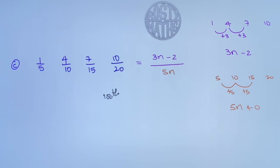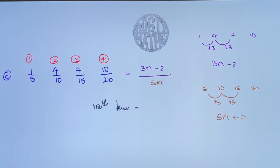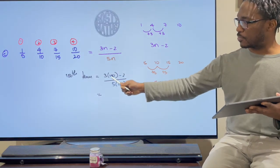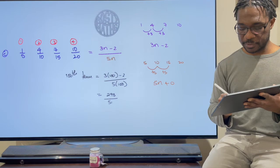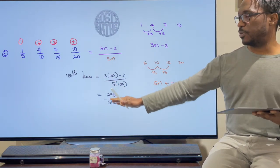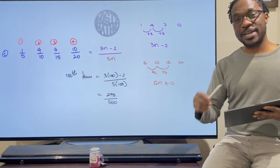For the bottom part of the sequence I've got 5, 10, 15, and 20 — clearly going up by 5 every time, so immediately 5n. If we take 5 away, it's plus zero, so that's just 5n. The nth term of the fractional sequence is (3n − 2) / 5n. For the hundredth term, change all the n's to 100: that's (3×100 − 2) over (5×100), which is 298 over 500. You can simplify that if you like.